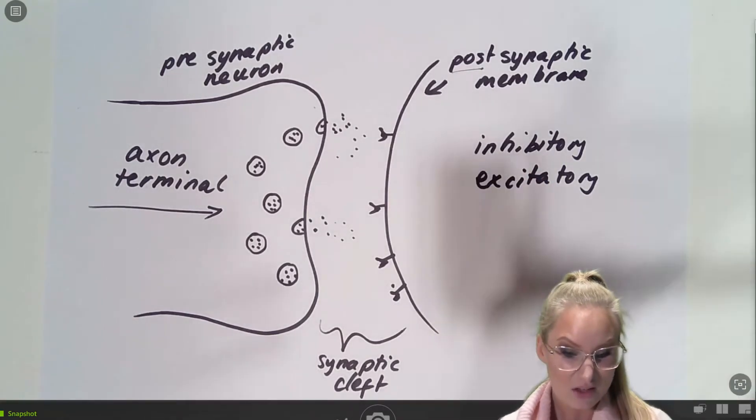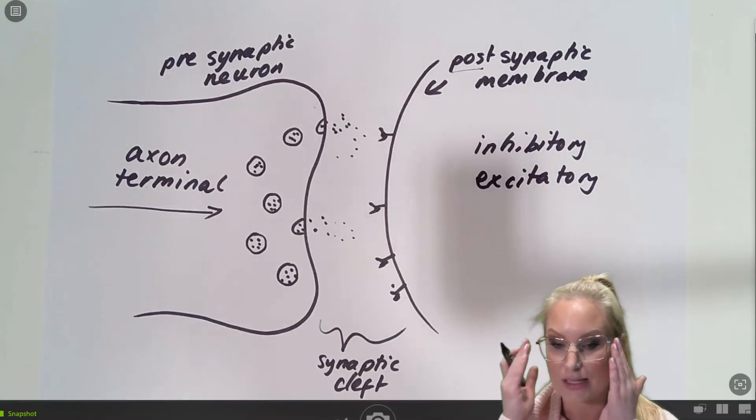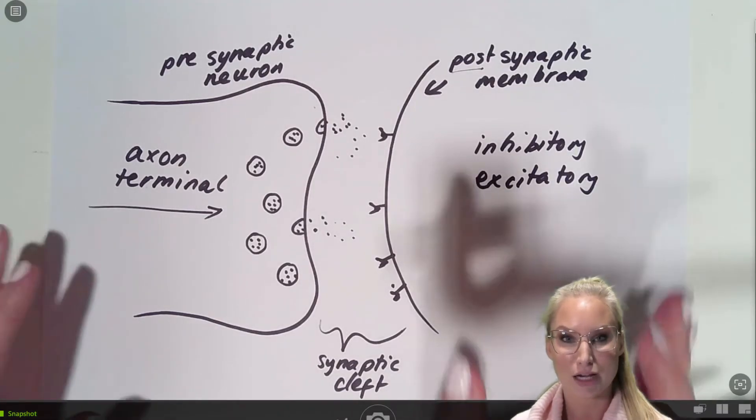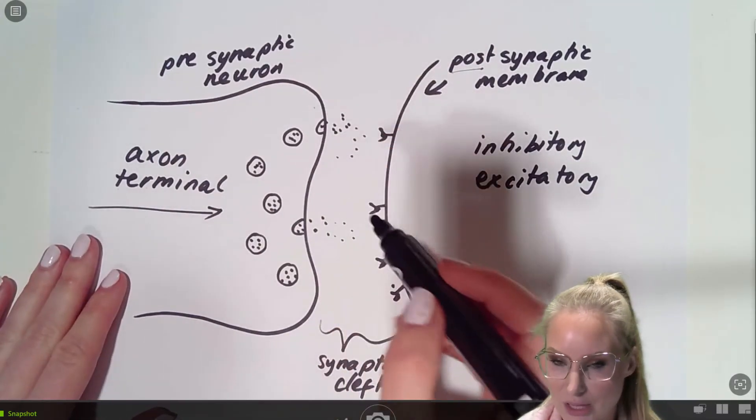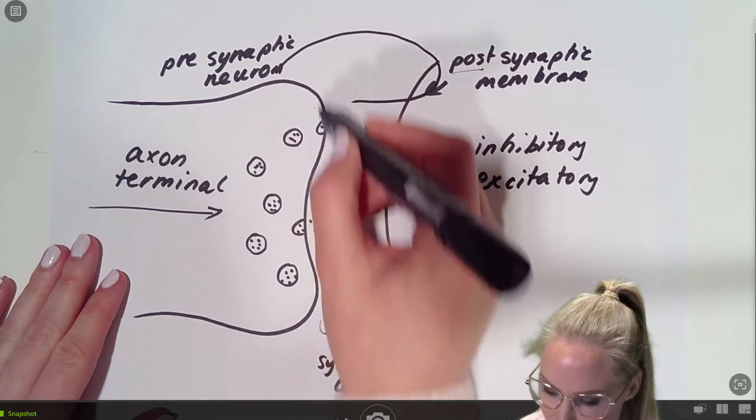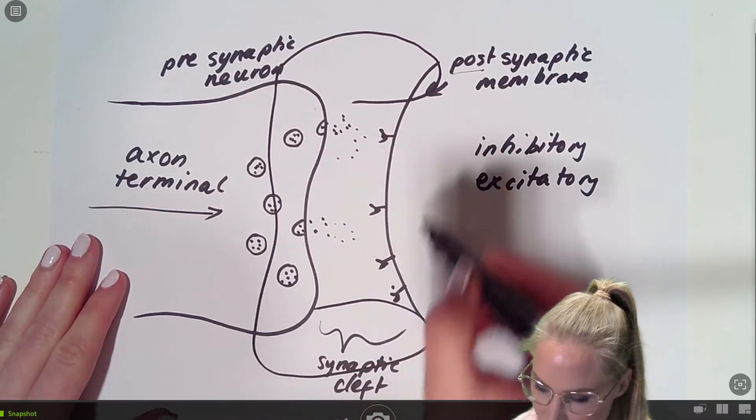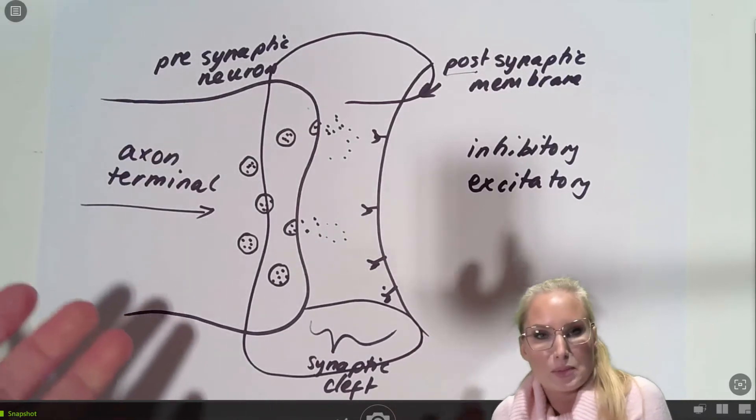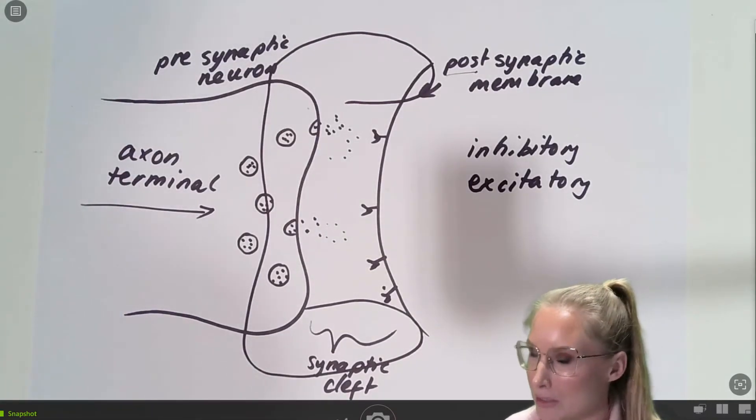Now, this is not the only thing that's going on in this process. So we have another cell type which is actually involved. So we actually have astrocytes. And astrocytes literally will wrap themselves around this synapse. You might be wondering, well, what are they doing there?